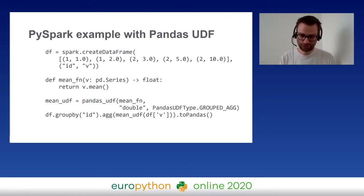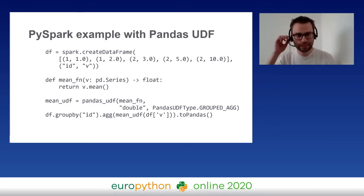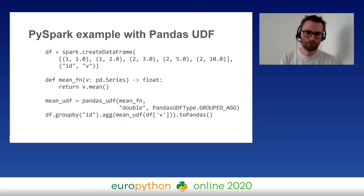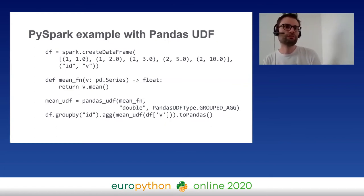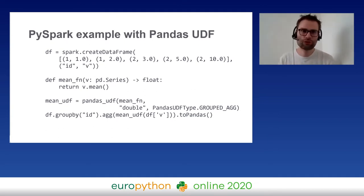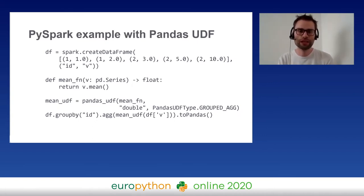Let me take an example. I'll execute the PySpark example from the documentation using Pandas UDF — what they also call vectorized UDF. Historically Spark was implemented in Scala and Python was added on top. When you execute custom Python functions, your execution flow is in Java on the JVM, and you have to serialize data into Python and back, which was slow. The Pandas or vectorized UDF lets you work directly on Pandas Series using Apache Arrow for efficient in-memory data passing between Scala and Python.